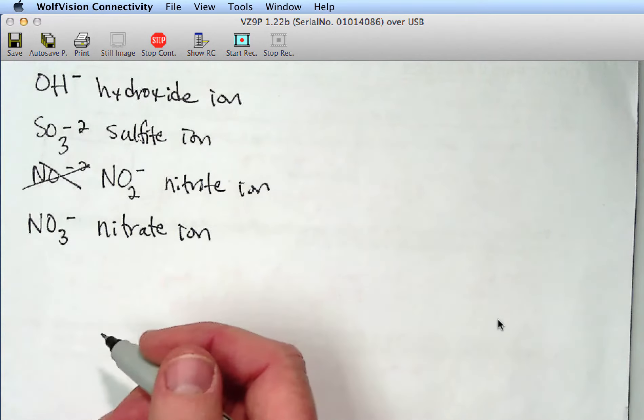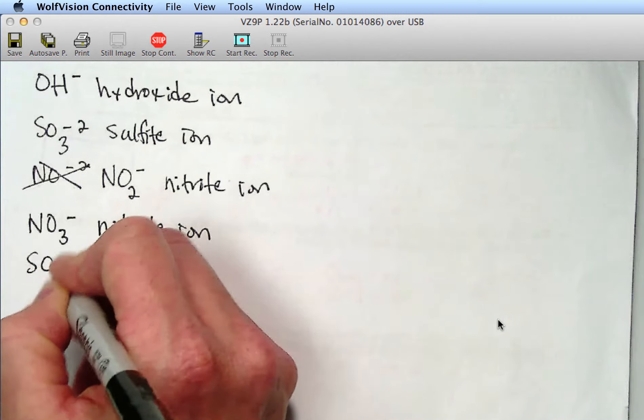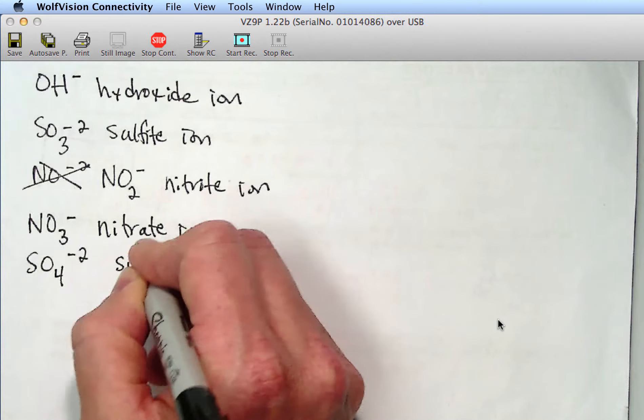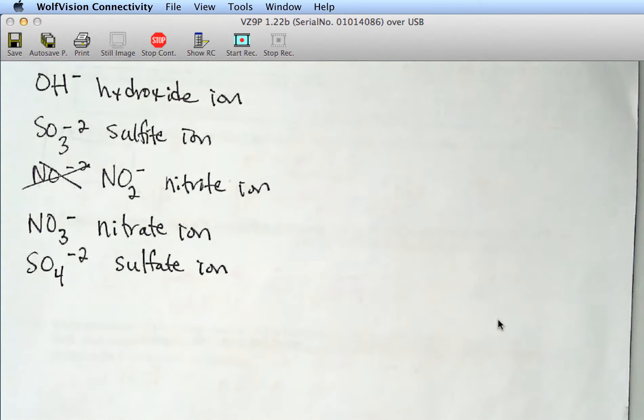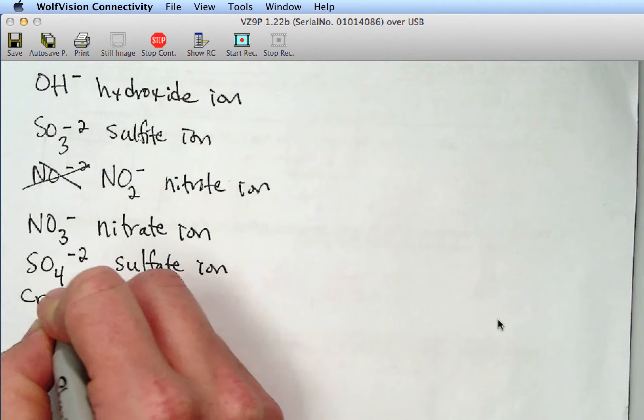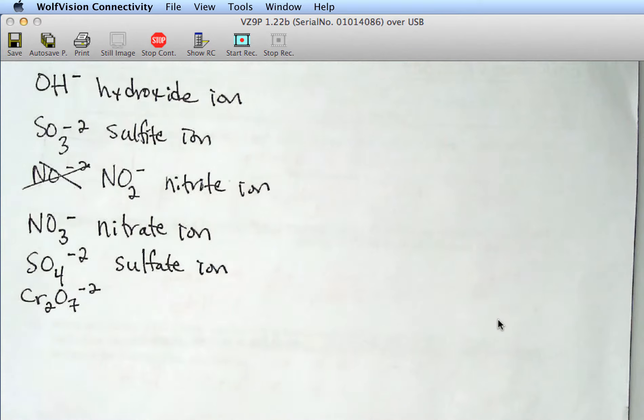What other polyatomic ions do we have? Sulfate? Yes. So SO4^2-. Sulfate ion. Dichromate. Cr2O7^2-. Yeah, very good. This minus 2, 2 minus. I'm not picky about this.